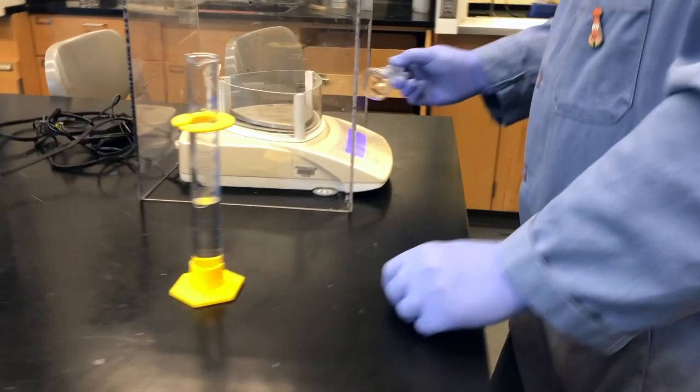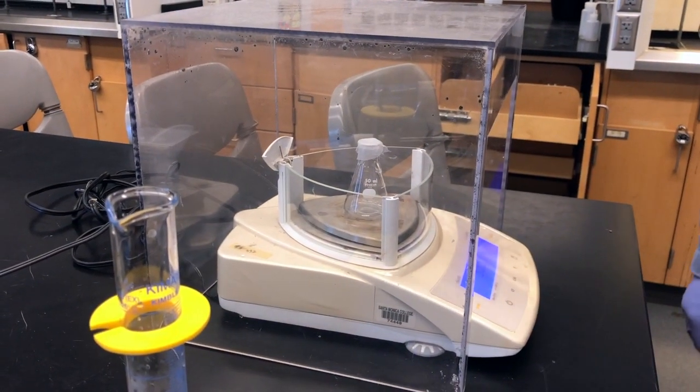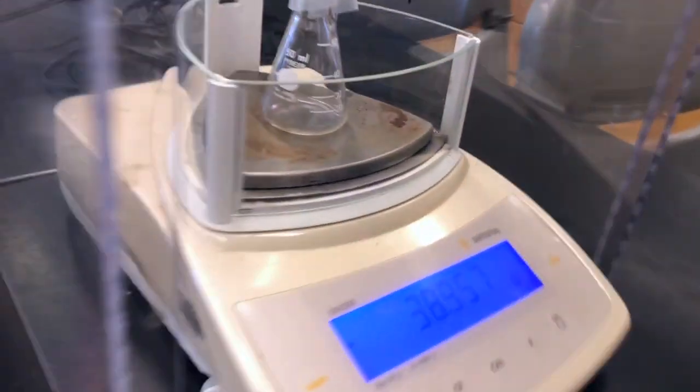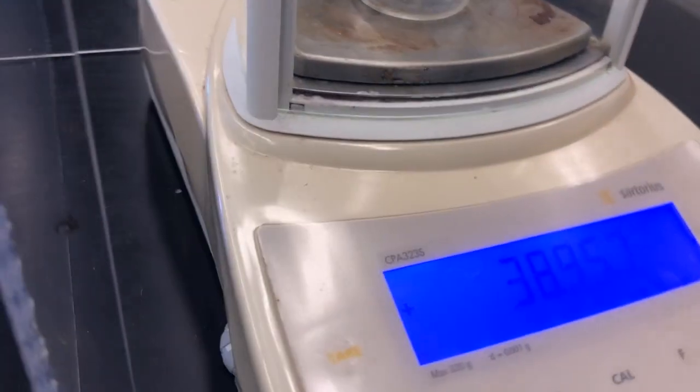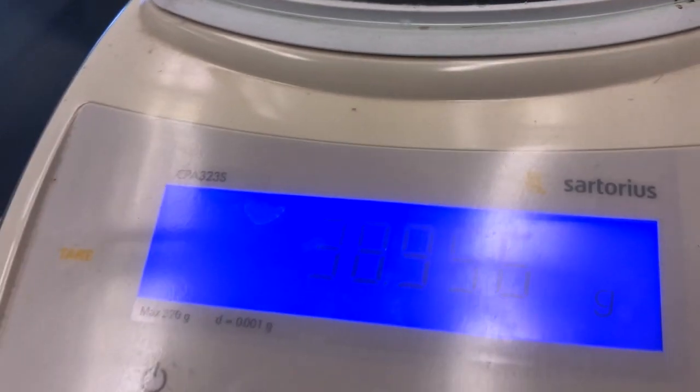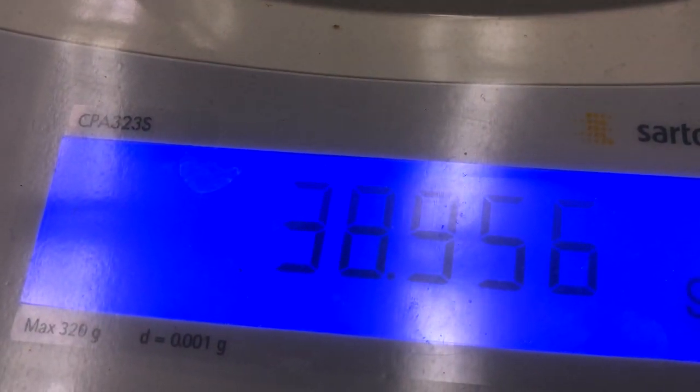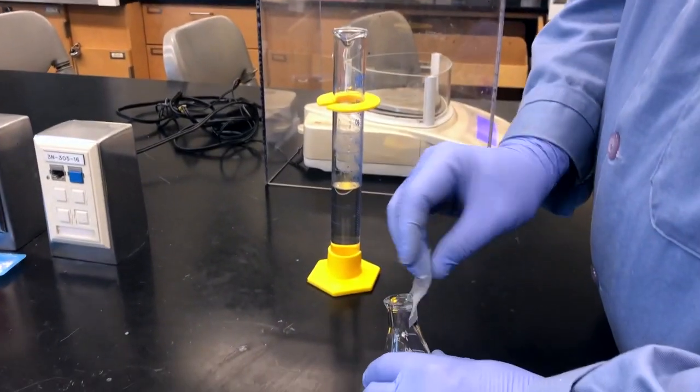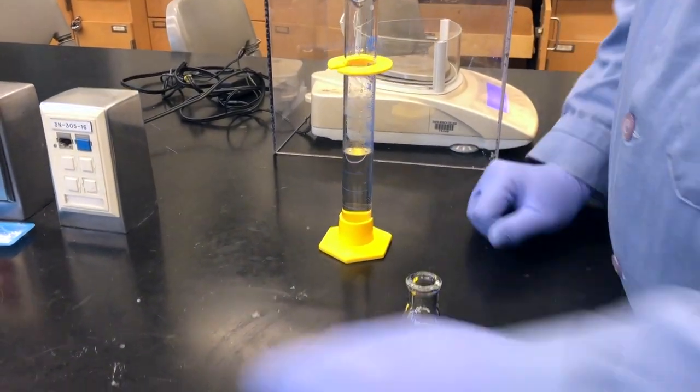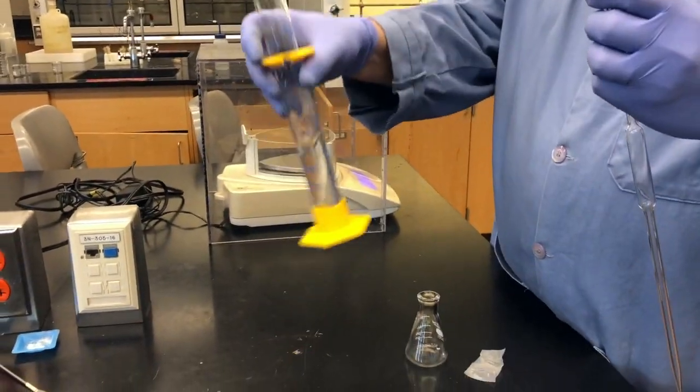Now it's time to measure the density of our distillate. We start by weighing a small Erlenmeyer flask with a piece of parafilm. Record the empty mass into your notebooks. The density measurement is important because it tells us the percentage of alcohol both by mass and by volume that's found in our distillate.